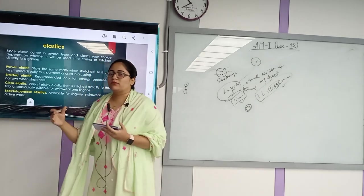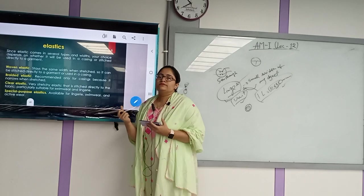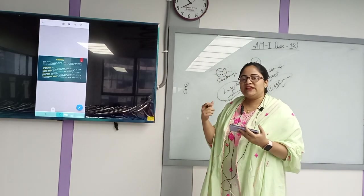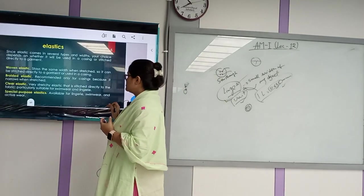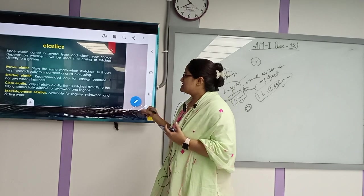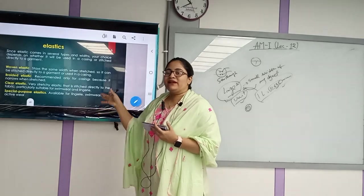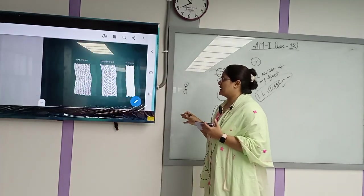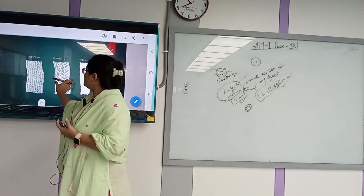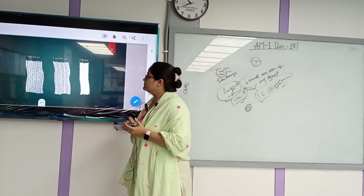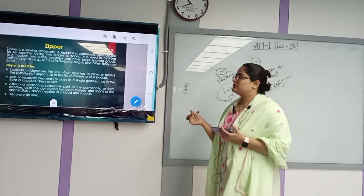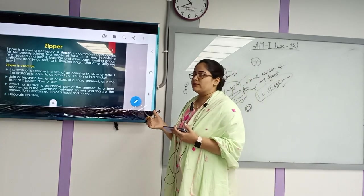Clear elastic is not normally visible. This is white and transparent in color. But it has good elasticity — a great elasticity. Now we have to use the inner elastic. So just look — there is a clear elastic, so it is transparent. Look at the braided elastic, and it is narrower. Normal okay.